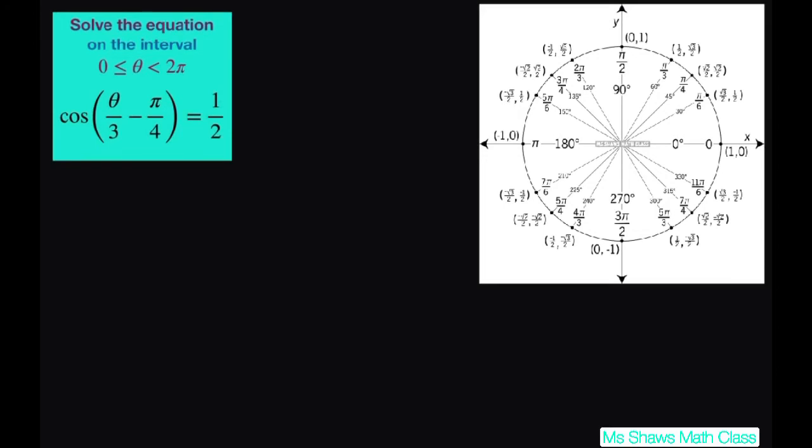This is what's called your argument here. So I'm just going to call that alpha since we already are using theta and write this as cosine of alpha equals 1 half.